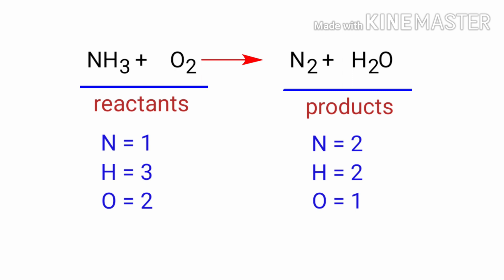In the reactants side there is one nitrogen atom, three hydrogen atoms, and two oxygen atoms present. On the products side there are two nitrogen atoms, two hydrogen atoms, and one oxygen atom present.